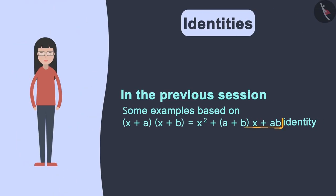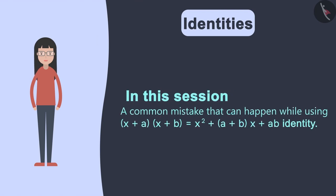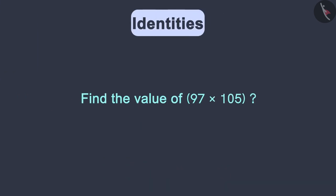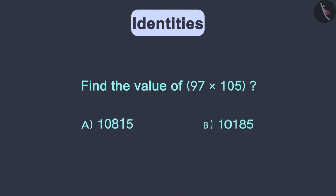In the previous session, we have seen some examples based on application of this identity. In this session, we will see a common mistake that can happen while using this identity. Look at this question. Let me give you two options.